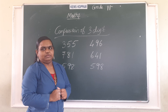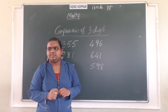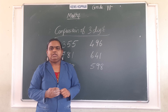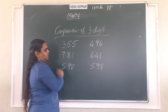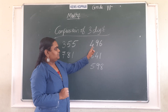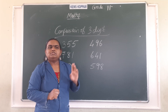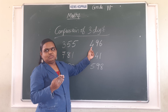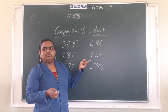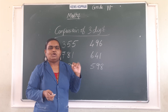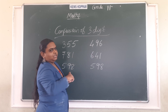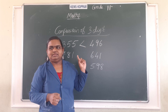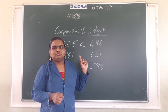First number is three hundred and fifty-five, next number is four hundred and ninety-six. Which is the biggest number? I will tell you one idea. What is the first digit here? Three. What is the first digit here? Four. So this number is starting with three and this number is starting with four. Three is the smallest number, so four is the greatest number. So we can put the symbol like this. Is it easy to find them? Yes.